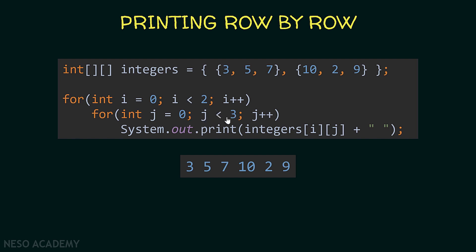Since the inner loop condition is false we execute i++, because we finished the first iteration of the outer loop. Now i is equal to one and the condition is true, so we do the same thing with i equal to one. We print integers[1][0], integers[1][1], and integers[1][2], so ten, two, and nine are printed. After these elements are printed we increment i, the outer condition becomes false, and we have printed our array row by row.